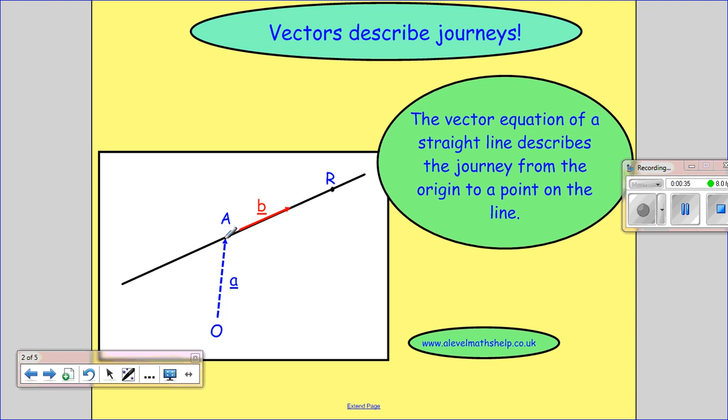And then once I've got onto my line, I want to be able to go to some point on my line. So to go to some point on my line, I'm going to be moving through this vector here, B, where this vector is just a vector which is parallel to my line. And I don't know how many B's I need to have to get from A to R, but I need some multiple of B,